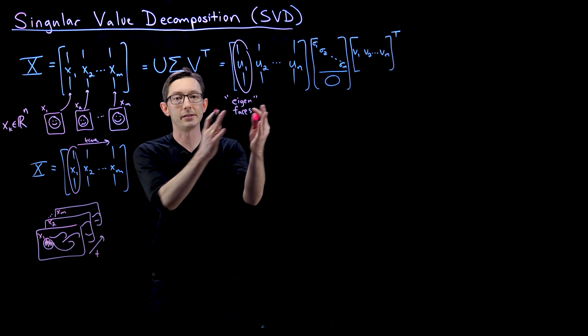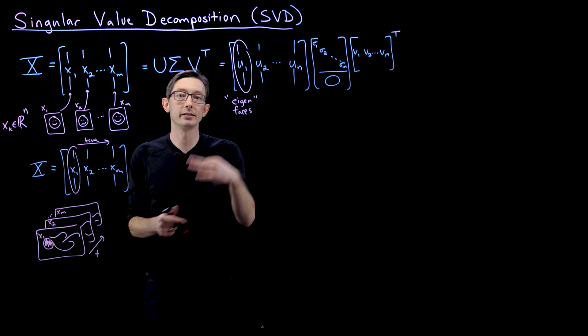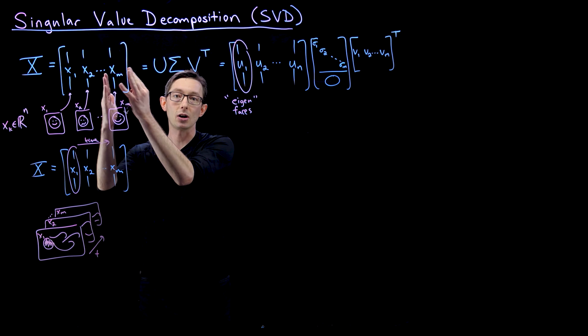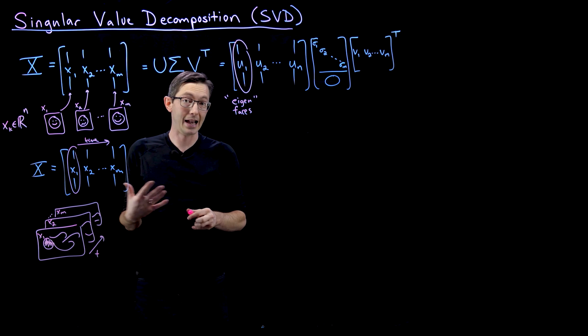So in the case of faces, these are eigenfaces. In the case of flow fields, they're eigen flow fields. And they give me a basis where I can represent each column of my original data matrix X.